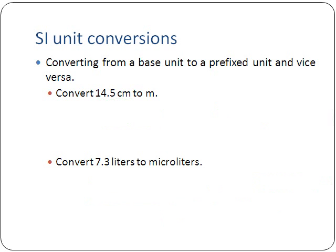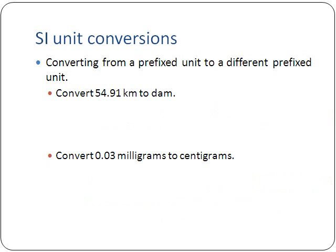Let's do a couple more of these. This next one we're going to make one slight change — last time we only changed between things that didn't have a prefix to ones that did have a prefix, or vice versa. Here, we're going to go from a prefix unit to another prefix unit. In this case: 54.91 kilometers to decameters. This one might be a little harder to do quickly in your head, so you'll see it's a little more useful to set up the table. We start off with 54.91 kilometers.